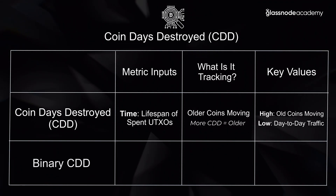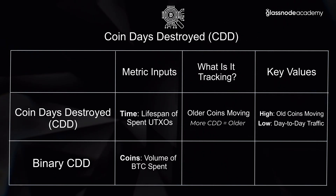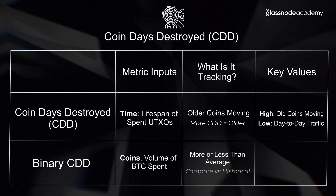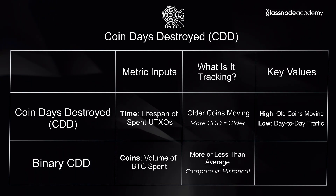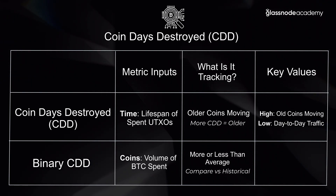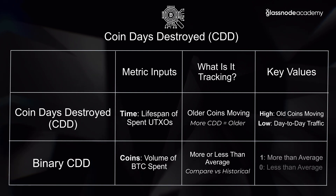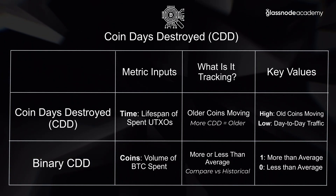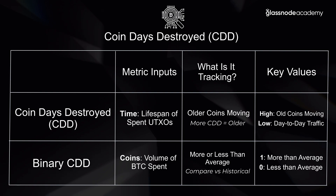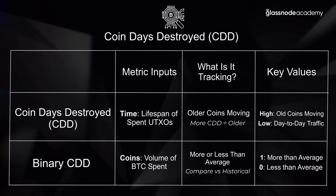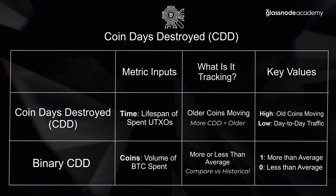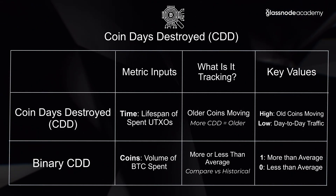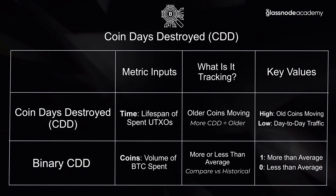Now, what Binary Coin Days Destroyed is — it looks at the average Coin Days Destroyed over Bitcoin's lifespan. It looks at what is an average value, what is considered normal. And it will return a one or a zero, literally a binary number, whether the current day is more or less than that average. So it's giving us a bit of an idea, compared to the historical performance, what is typical in the market — are we greater than average, which will return a value of one, or less than average, which will return a value of zero.